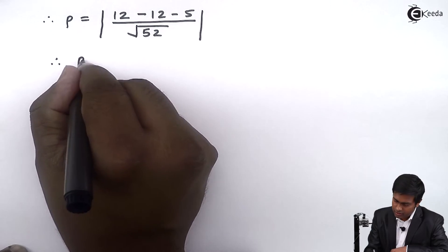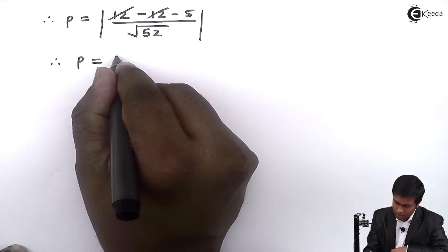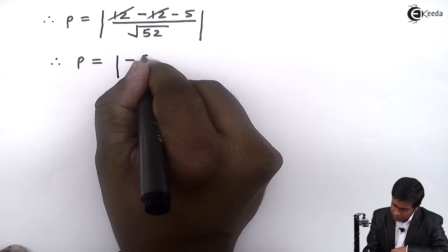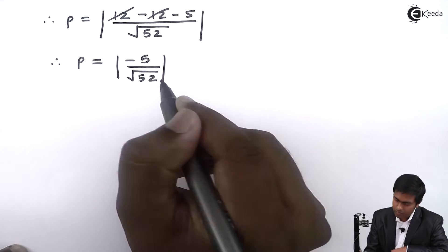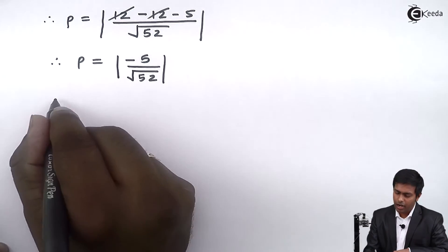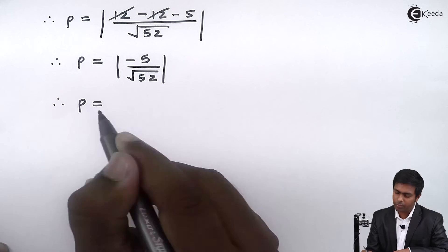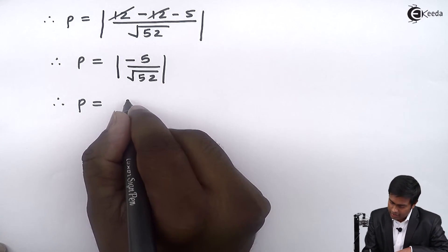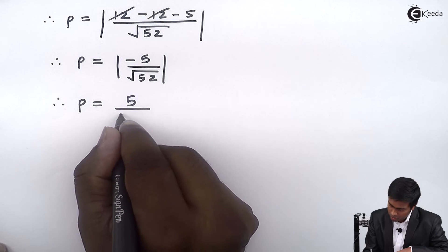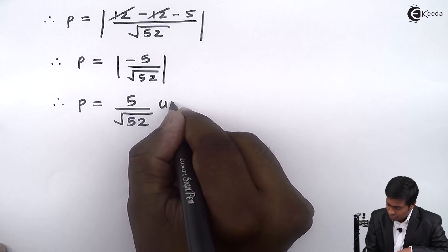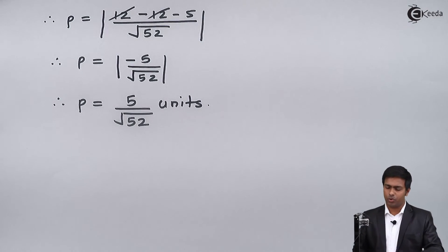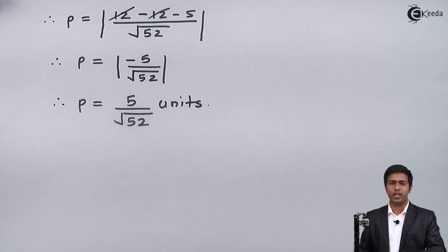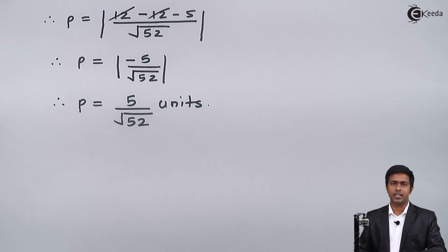So 12 and minus 12 cancel. Since we have the modulus sign and the modulus of a negative number is positive, we get the length as 5 upon root of 52 units. So the length of perpendicular drawn from the point (3, 2) on the line 4x minus 6y minus 5 equal to 0 is 5 by root 52 units. Thank you.